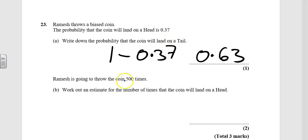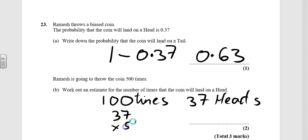So if he did it 100 times, he would have 37 heads because 0.37, that as a percentage, is 37%. So we need to do 37 times 5, which is 185. So we worked out for 100, it was 37. We times it by 5 because it was 500 times we were after.